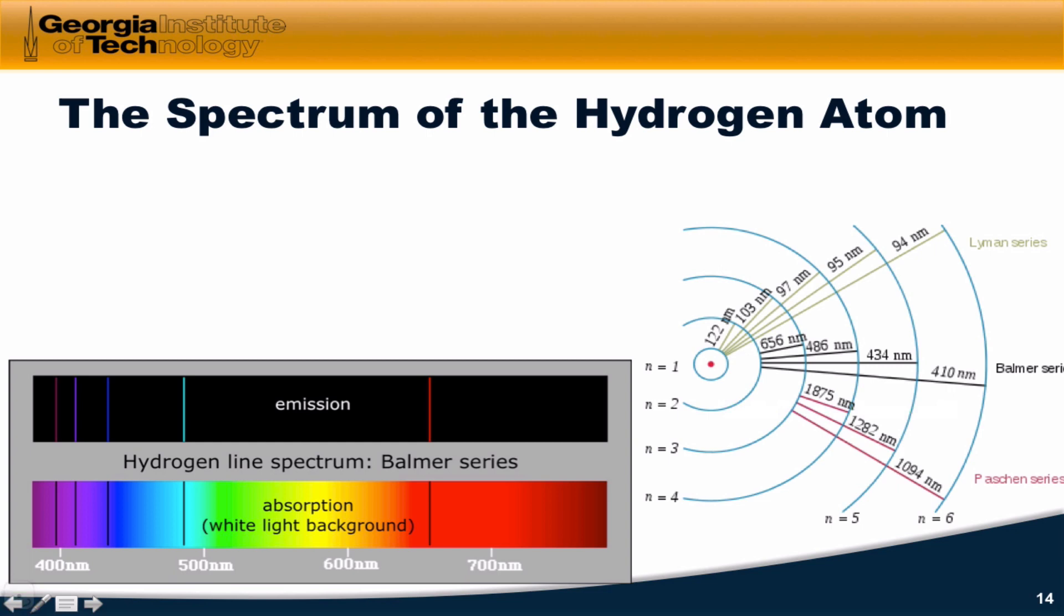Instead of a rainbow, what we observe from the emission spectrum of hydrogen, which is shown for you here, is specific discrete frequencies or wavelengths of light emitted. This is actually quite remarkable. We only see, for example, a deep purple line, a lighter purple line, a blue line, a light blue line, and a red line. These are the only visible frequencies that are emitted by the hydrogen atom.